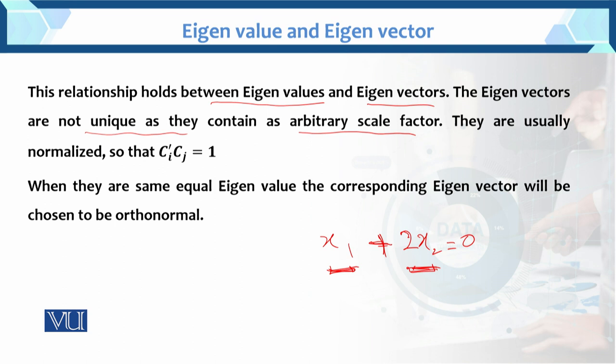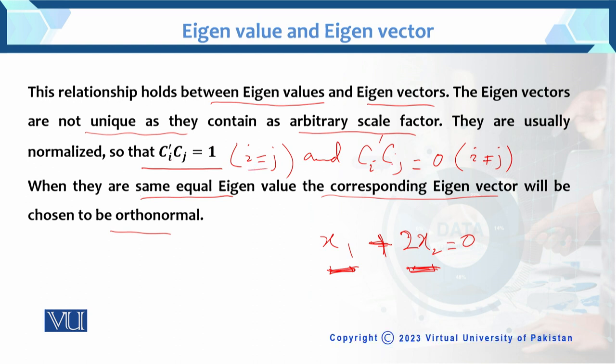To normalize these eigenvectors, we have a criteria: Cᵢ'Cⱼ = 1 if i = j, and Cᵢ'Cⱼ = 0 if i ≠ j. When there are repeated eigenvalues, the corresponding eigenvectors will be chosen to be orthonormal. This is our normalization criteria.